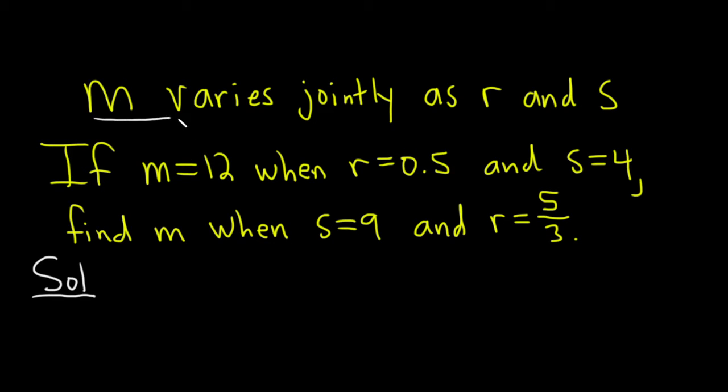So m varies jointly as r and s. Let's write that down. That means that m is equal to some constant k times r times s. So when you see it varies jointly and you have some variables, you just multiply them.